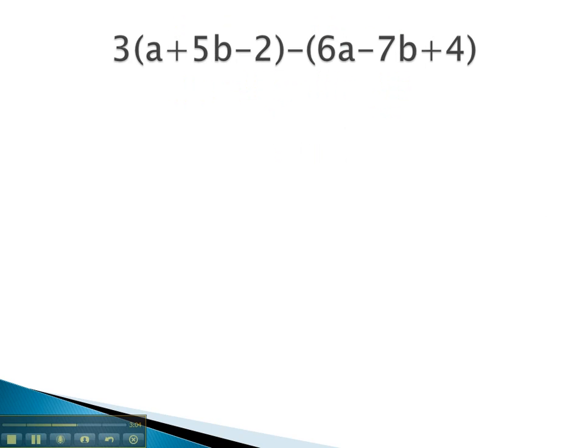Let's try this example. Again, we see that we have to distribute through parentheses first. 3 times a is 3a. 3 times 5b gives us positive 15 of these b's. 3 times negative 2 gives us negative 6.